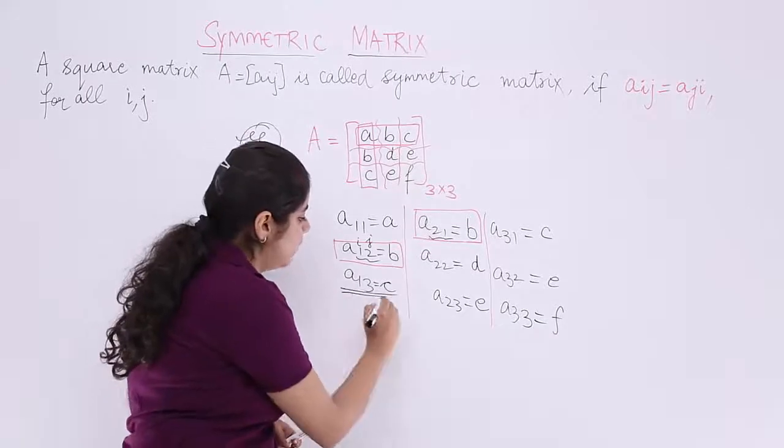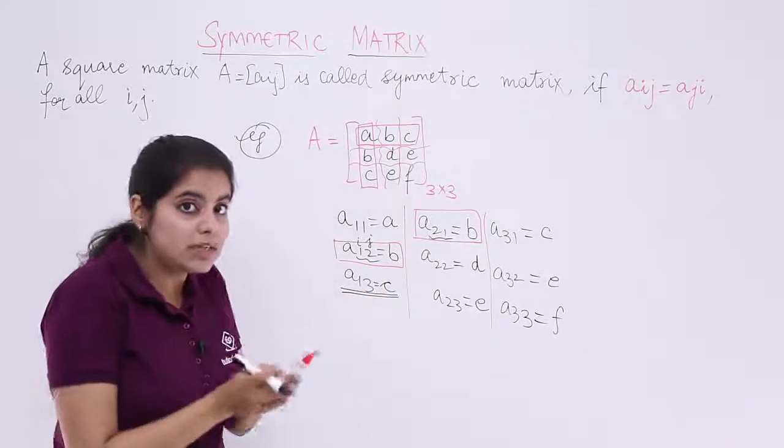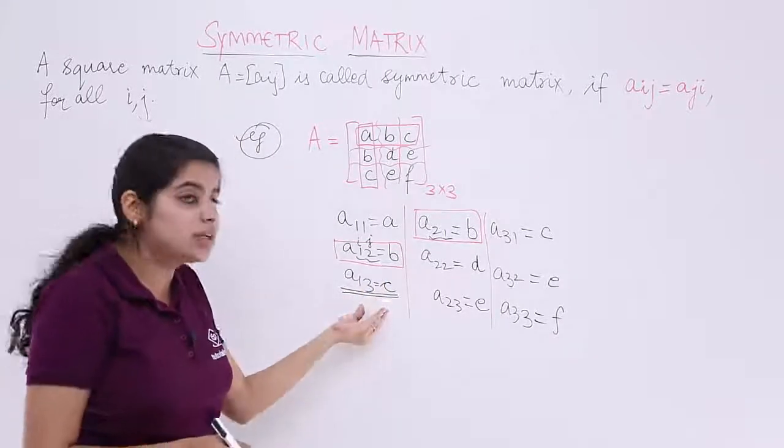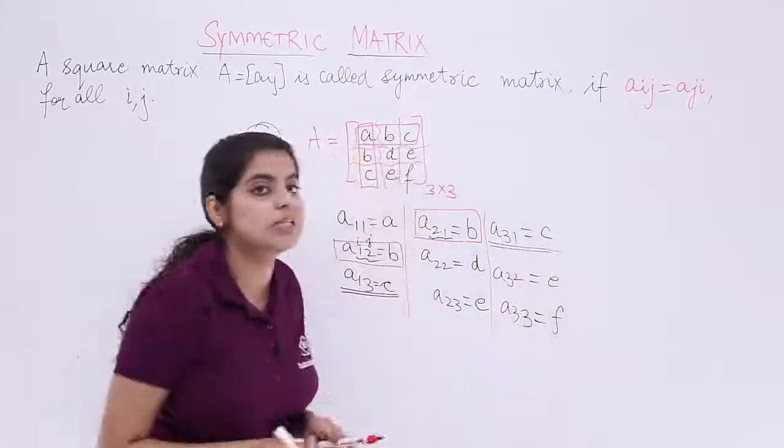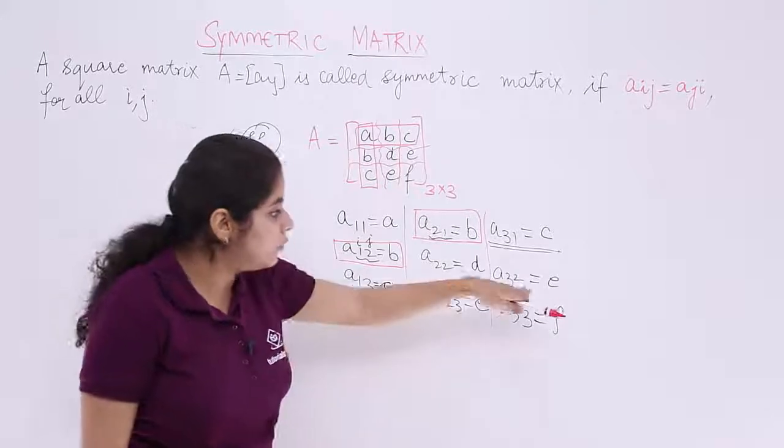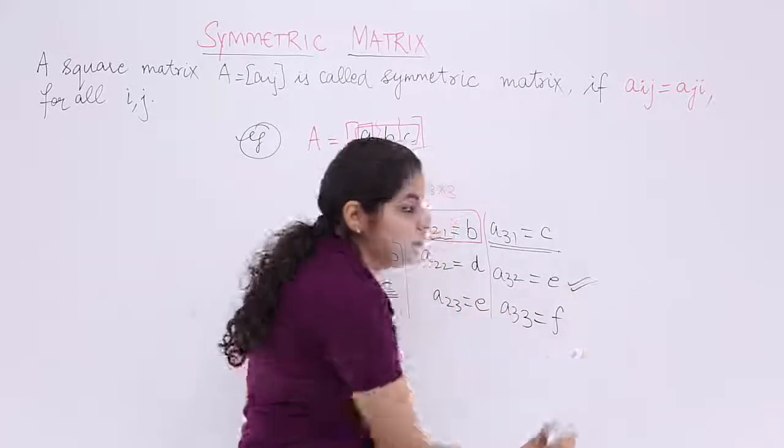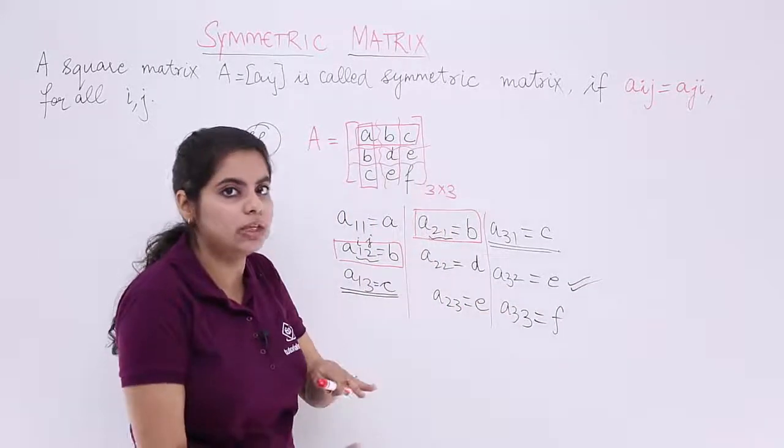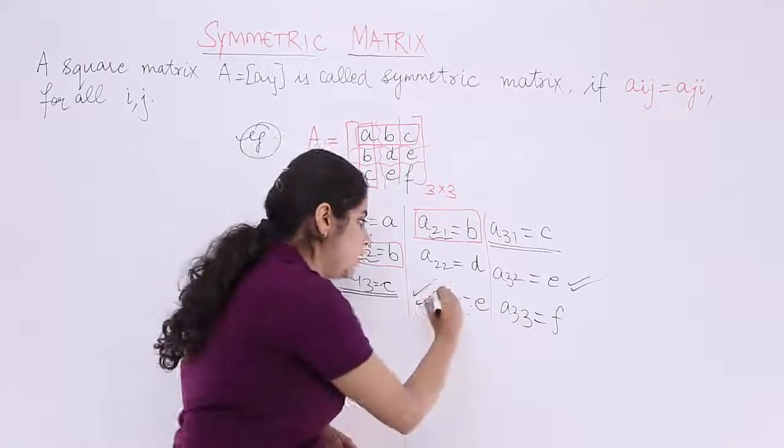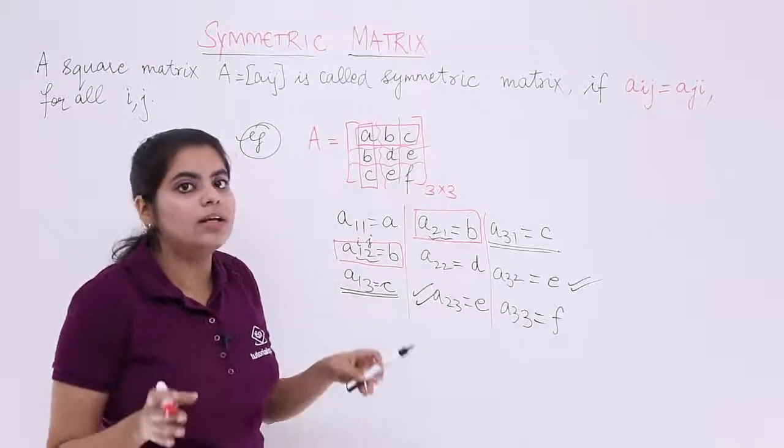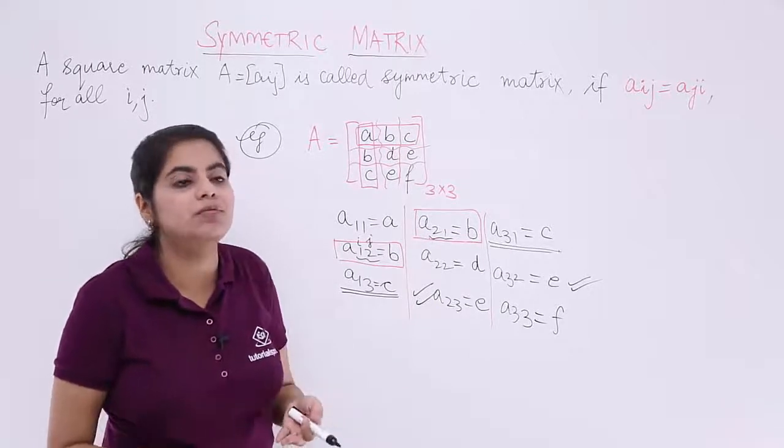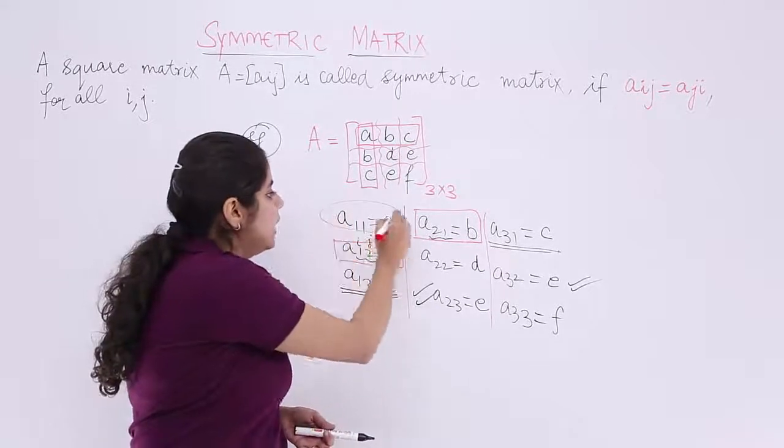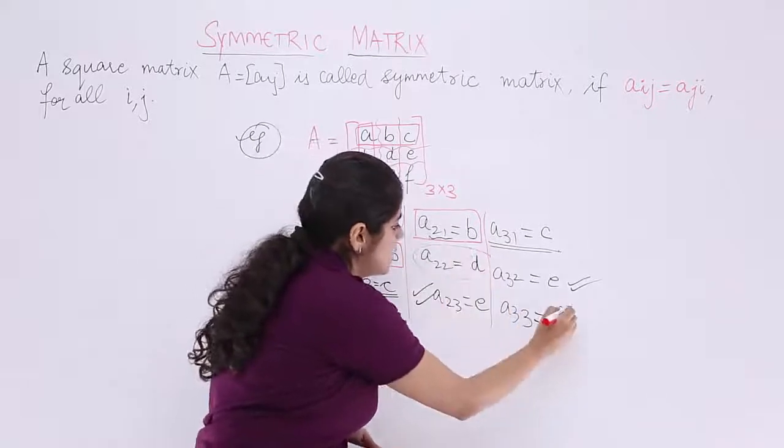You see A13, it is C. If it is a symmetric matrix, A31 should also be C. Where is A31? It is here, also C. Similarly, if A32 is E, that means A23, all interchanging should also be E. That means all the non-diagonal entries when interchanged with i,j give me the same value. Only the diagonal entries are something which are separate.